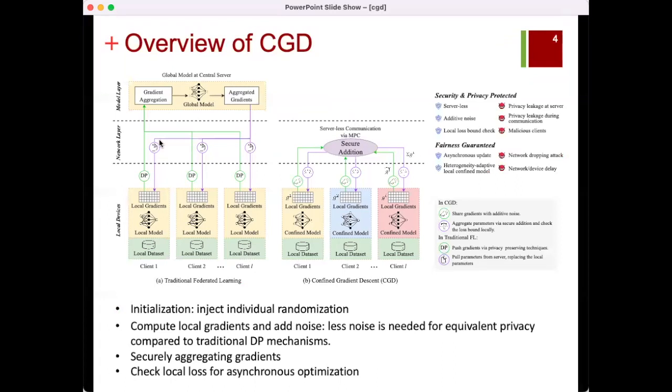This figure contrasts traditional FL with CGD. In traditional FL, all participants update a shared global model with their local gradients, whereas in CGD, each participant develops its own distinct and private confined models represented by different colors.